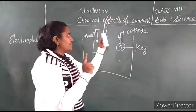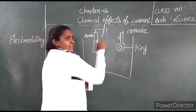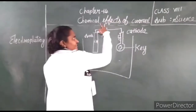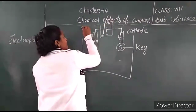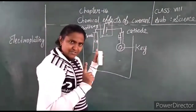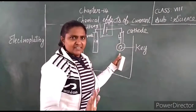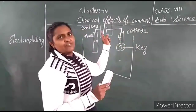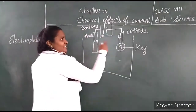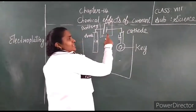You have to coat the key with copper, so the key is connected to the negative terminal of the battery — that is the cathode. The battery has two terminals: positive and negative. Positive means anode; negative means cathode. This side is the anode, connected to the positive terminal of the battery. This side is the cathode, connected to the negative terminal of the battery.